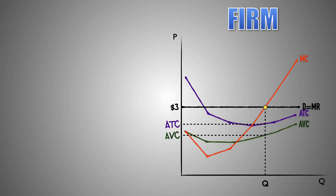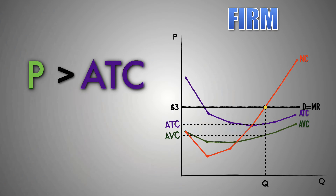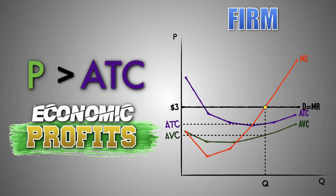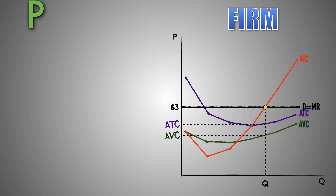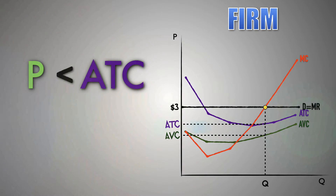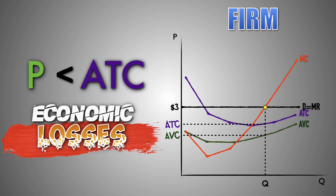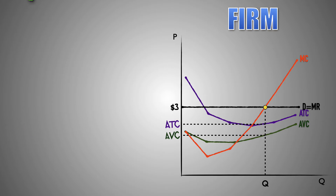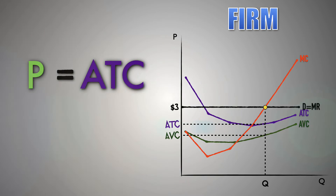From here, we can determine whether the firm is earning economic profits, taking economic losses, or breaking even. Here are the rules: if the firm produces a quantity where the market price is above the ATC curve, then the firm is earning economic profits. If the firm produces a quantity where the market price is below the ATC curve, then the firm is taking economic losses. If the firm produces a quantity where the market price is equal to the ATC curve, then the firm is breaking even.